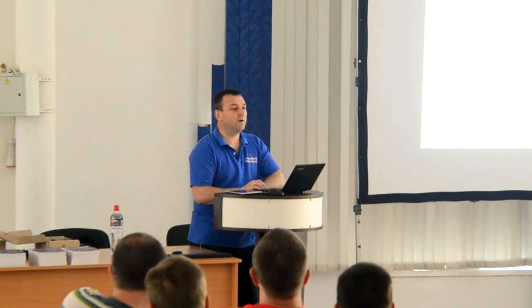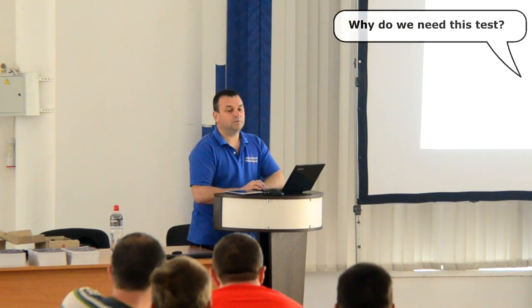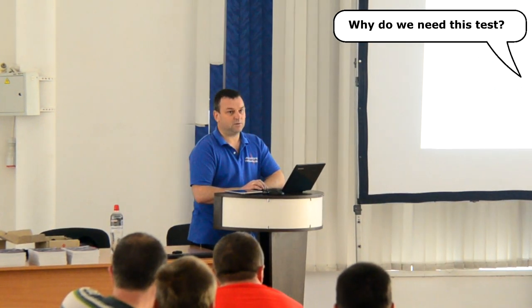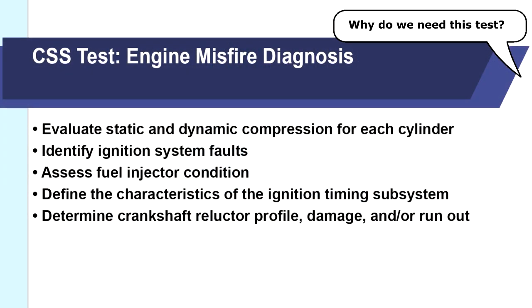And by 2008, I succeeded. I developed a technique I called the CSS test. This test allows you to identify misfire cylinders quickly and easily and indicates the area of origin of the problem. It allows you to obtain the following information without disassembling the engine: compare the dynamic compression of the engine cylinders, check the functionality of the ignition system for specific cylinders, check the operation of the fuel injectors, check the operation of the ignition timing subsystem, identify defects of the reluctor wheel, and evaluate the crankshaft position sensor signal level.